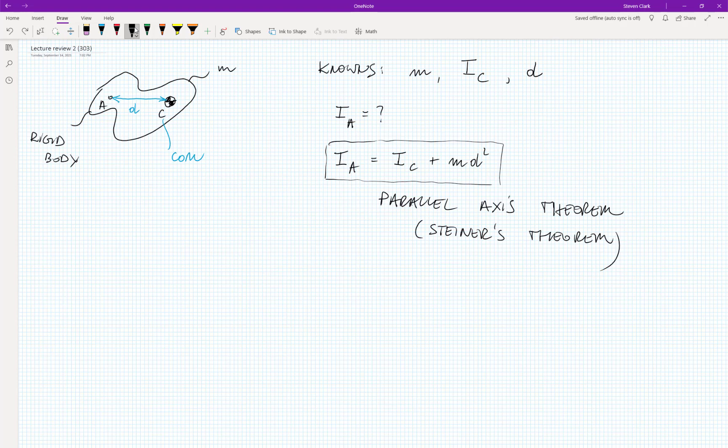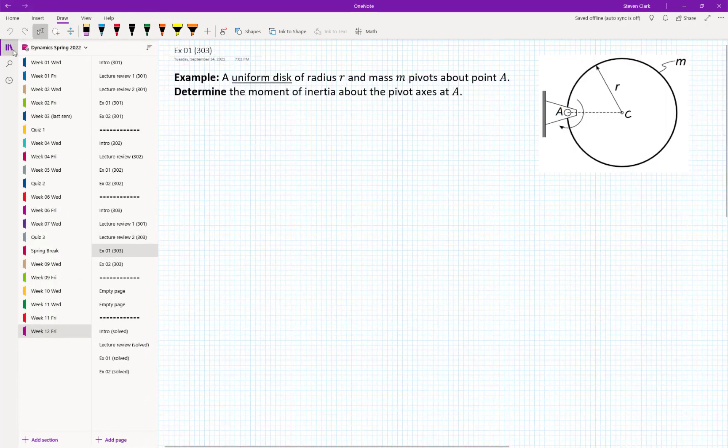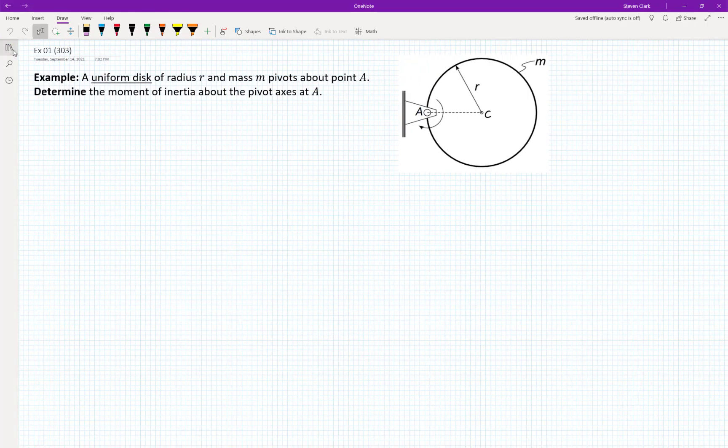We will use this expression today three times. I don't see any questions. So let's do example number one. Since the problem statement is so short, I will read it. So in here we have a uniform disk of radius R and mass M. And it pivots about point A. Authors of that problem ask us to determine the moment of inertia about axis A. So what do we know? We know M. We know radius of that disk. And we also know important information that that disk is uniform. And again, that means that the mass is distributed evenly in that disk.